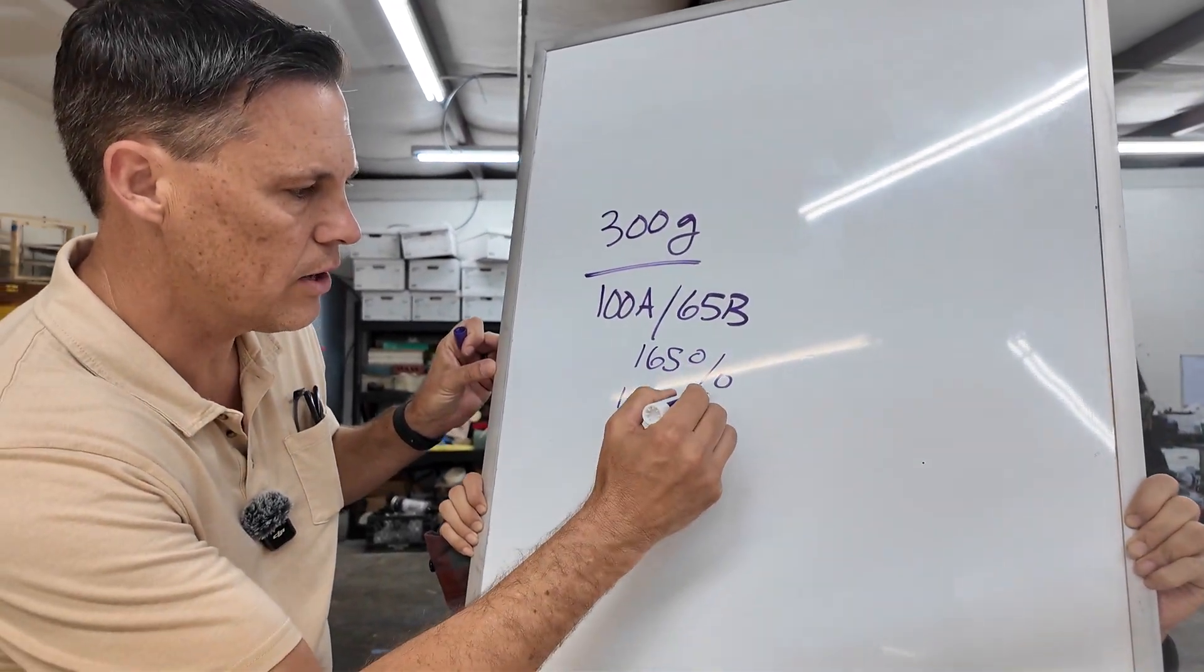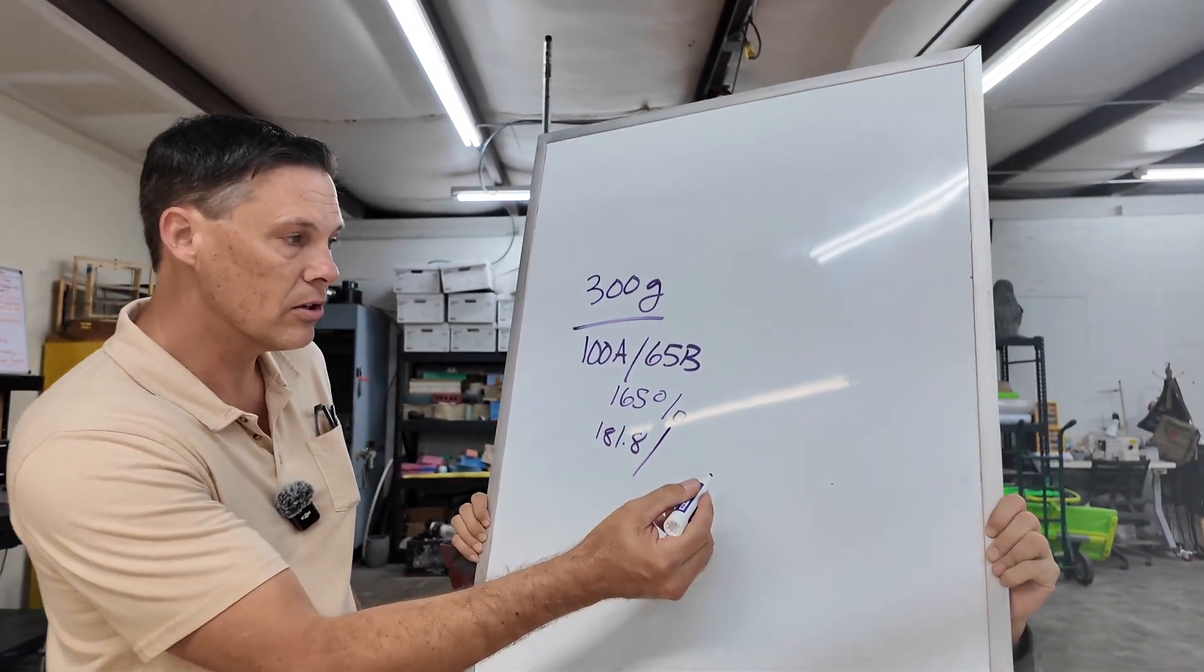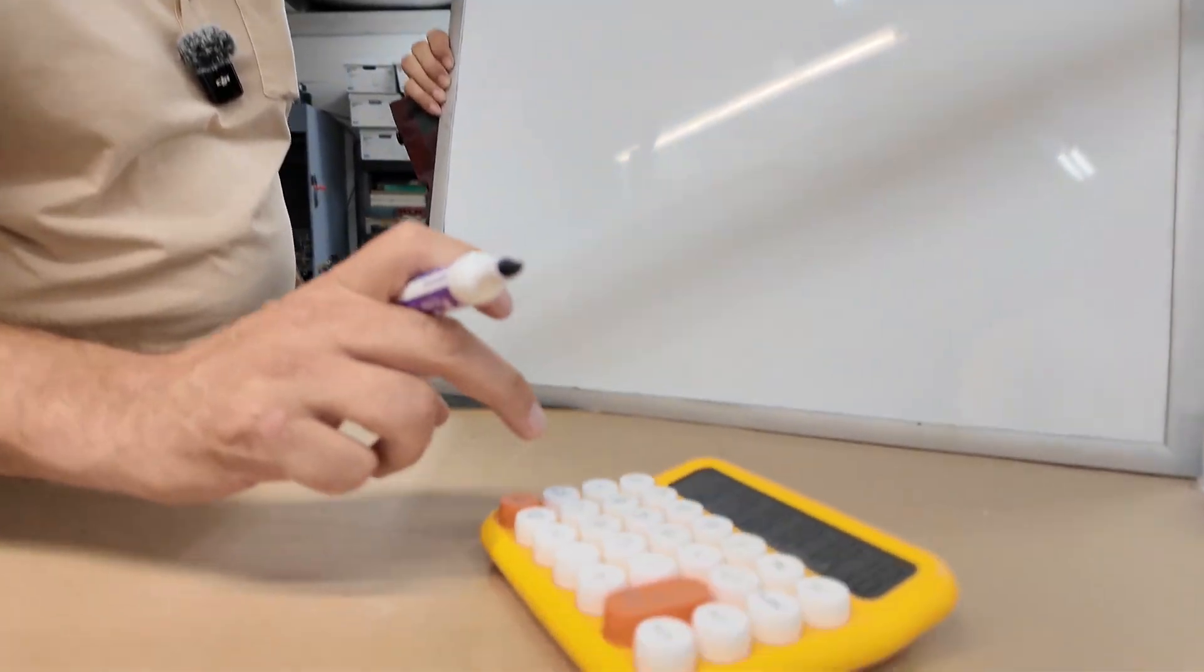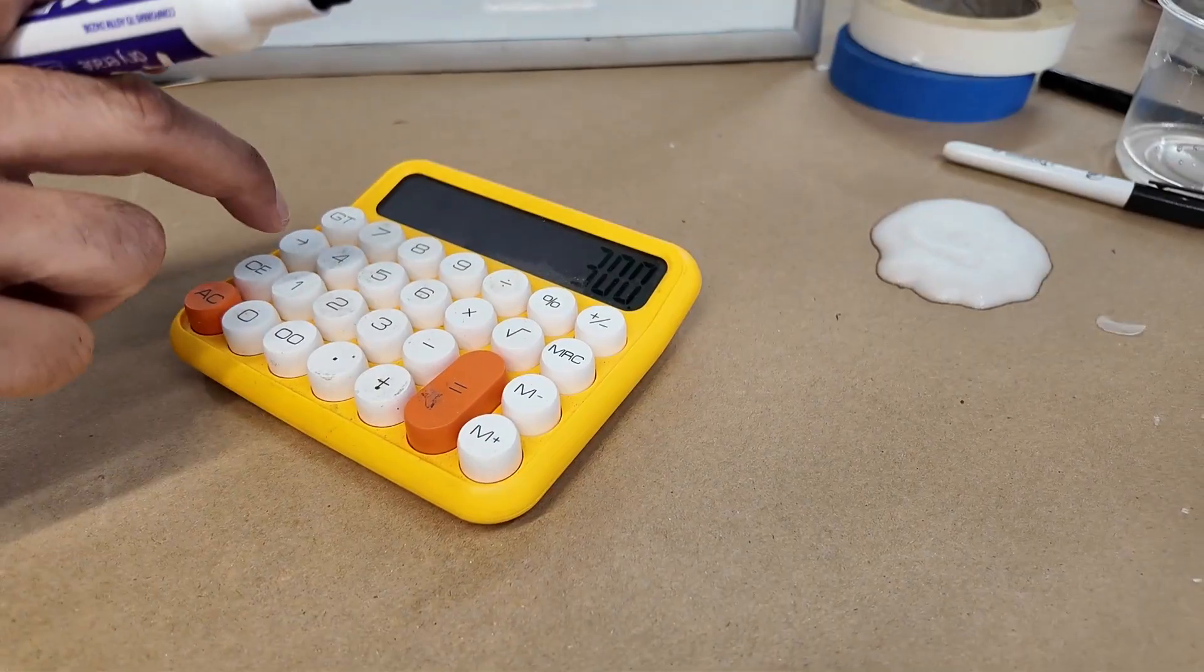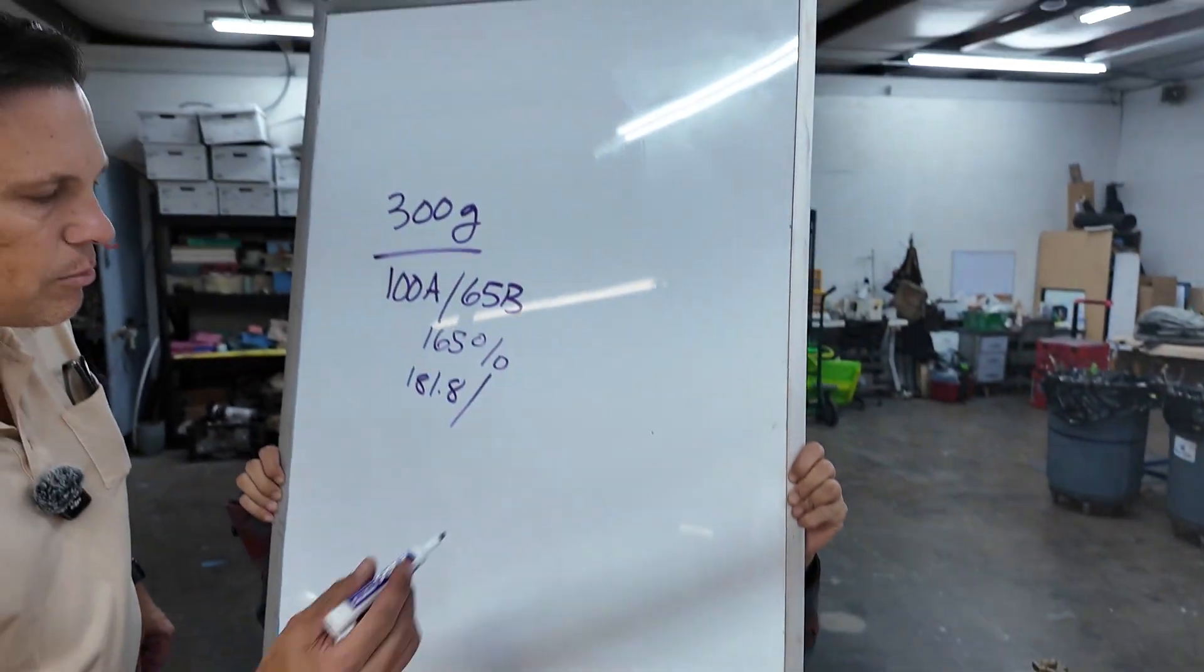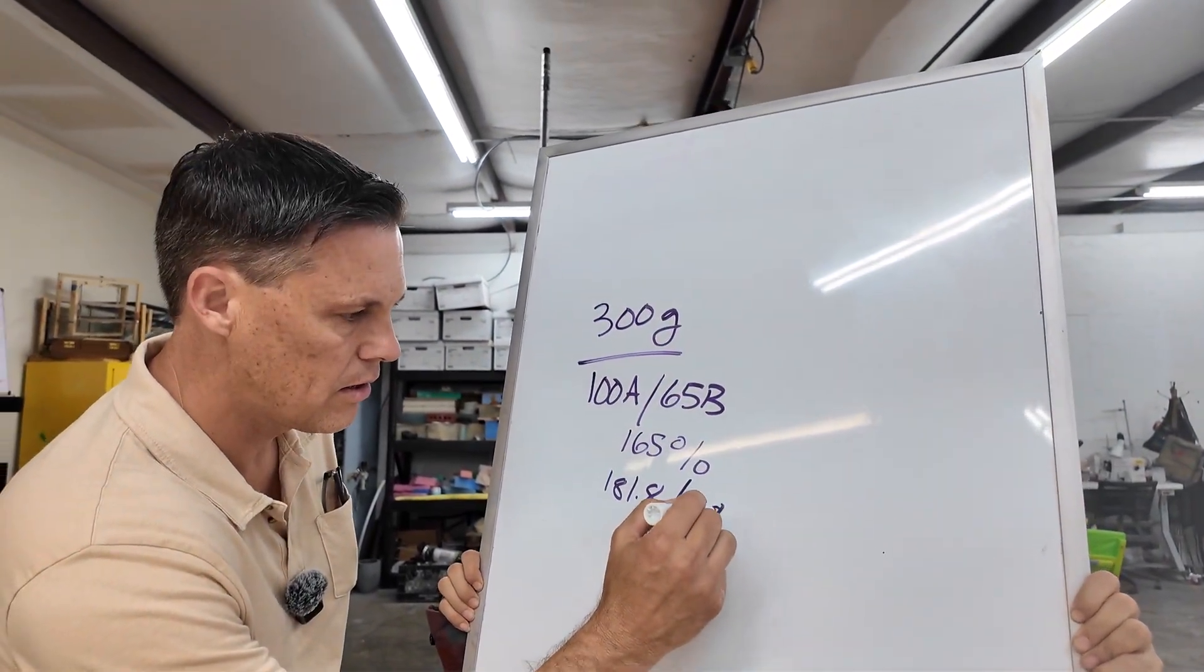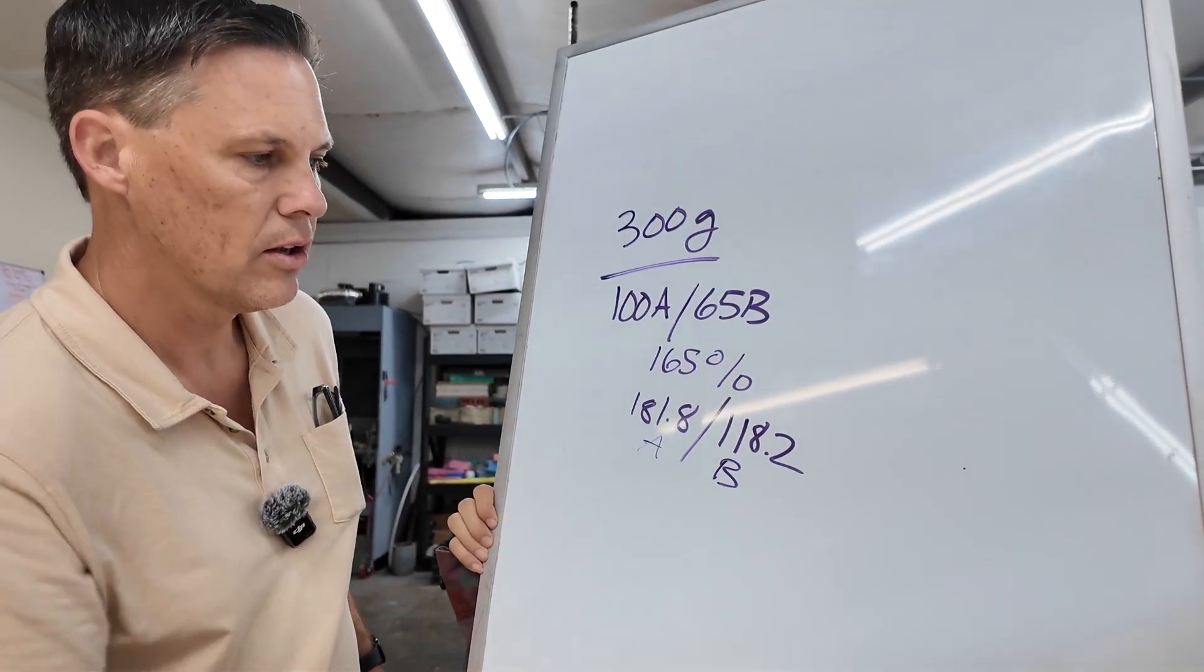181.8. So that's the 100%, and the balance is the rest of the B. So if I say 300 take away 181.8, that equals 118.2. So that's how much A I need, and that's how much B I need.